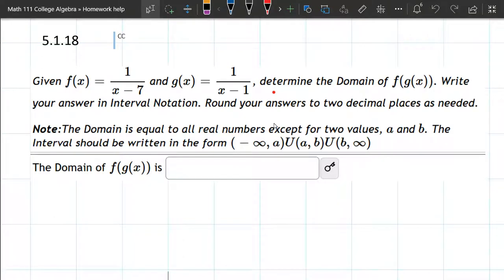So we have two functions, f and g. They're both rational functions, so we could divide by zero on each of them. But what we're gonna do is compose them here.